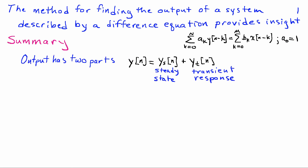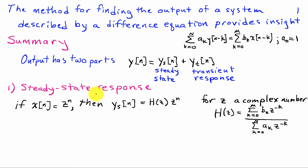The output of this difference equation, y(n), for a given input can be expressed as a sum of two terms: y_s(n), which represents the steady-state response of the system to the input, and y_t(n), which represents the transient response. Notice that the steady-state response behaves in like manner as the input, although it gets adjusted by some constant that depends on the input.